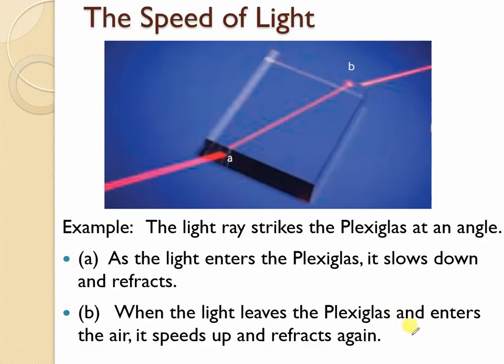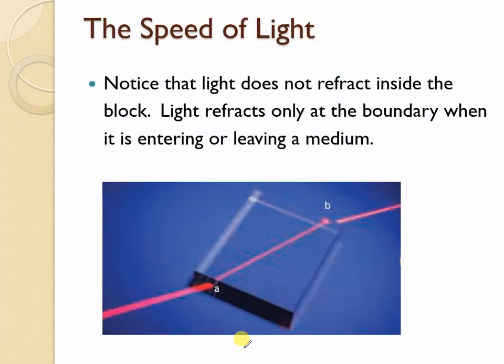So the speed of light. Where does this bending actually happen? It actually happens at our boundary here and then again as our light ray leaves the block. As light enters the Plexiglas it slows down and refracts. When light leaves the Plexiglas and enters the air, it speeds up and bends once again. Notice that the light does not refract inside the block but at our boundaries.